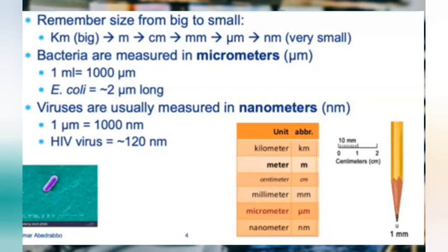That's why we use microscopes. Even smaller than a micrometer, if you divide a micrometer by a thousand, you get a nanometer. Viruses are measured in nanometers, so viruses are generally much smaller than bacteria. E. coli, a very common reference bacterium, is a couple micrometers long, while nanometers are a thousand times smaller than micrometers.